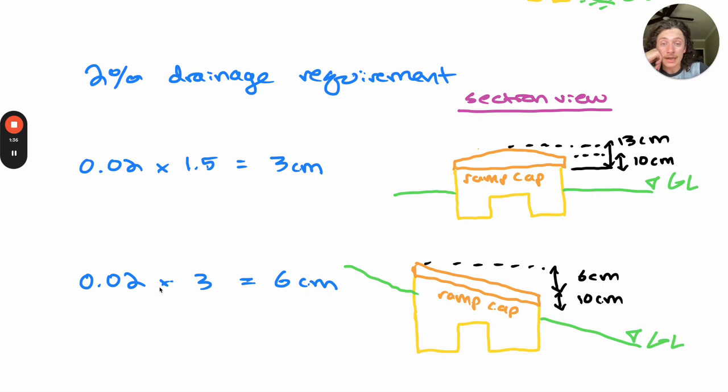For steep transverse slopes, it may be more advantageous to provide a continuous slope of 2 percent over the entire approach ramp, or 0.02 times 3, which is 6 centimeters.